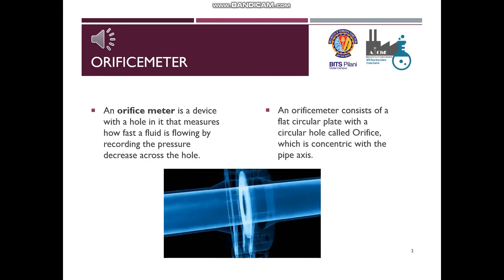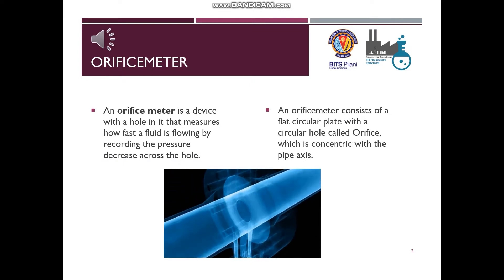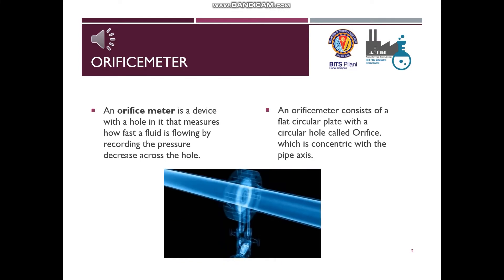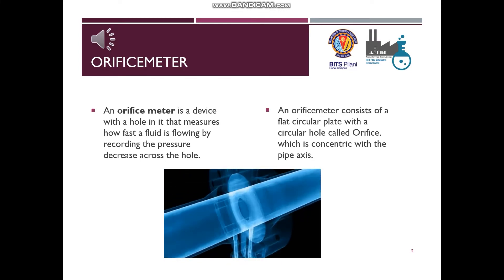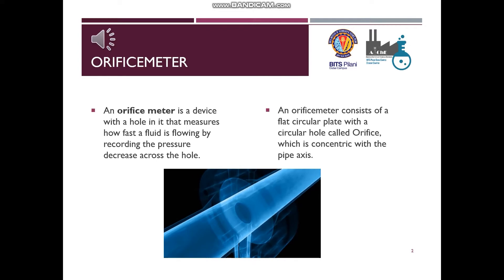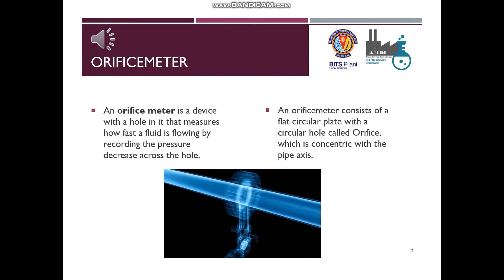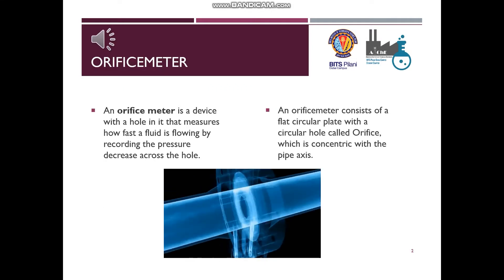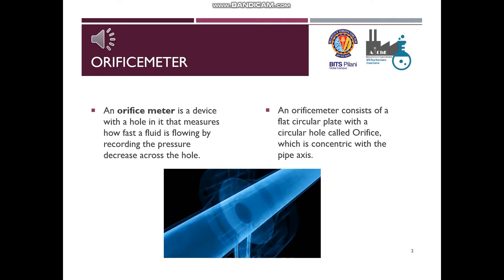Now let us study about orifice meter. An orifice meter is a device with a hole in it that measures how fast a fluid is flowing by measuring the pressure decrease across the hole. It consists of a flat circular plate with a circular hole called an orifice, which is concentric with the pipe's axis.